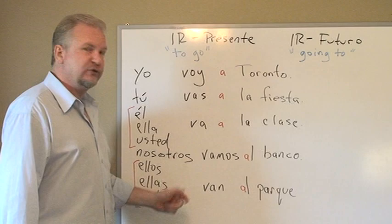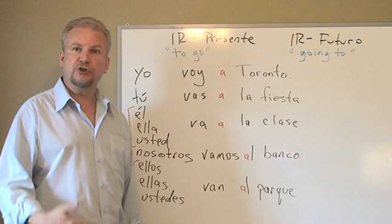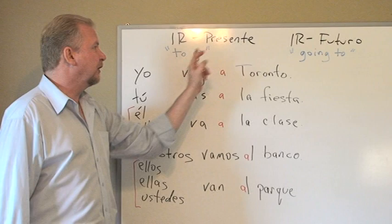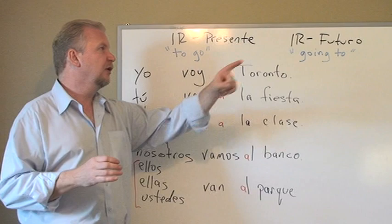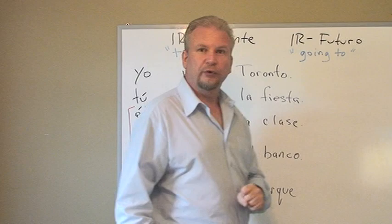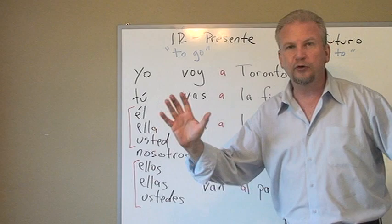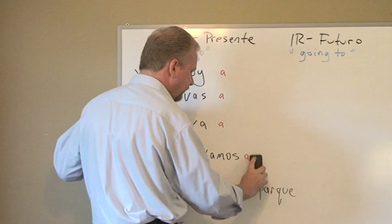So now you know the forms of the verb 'to go' — the verb IR — usually followed by the preposition 'a,' or 'to.' That's IR in the present: ir en el presente. But if we're talking about a two-verb sentence with the verb IR, the whole context changes from the present to the future — el futuro.